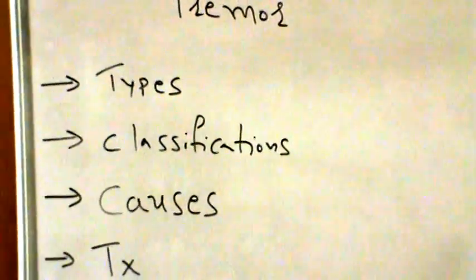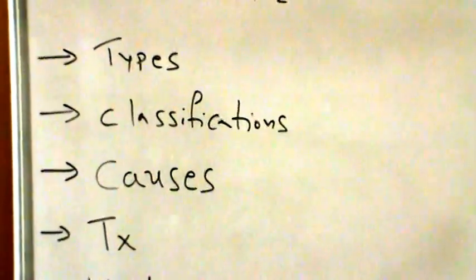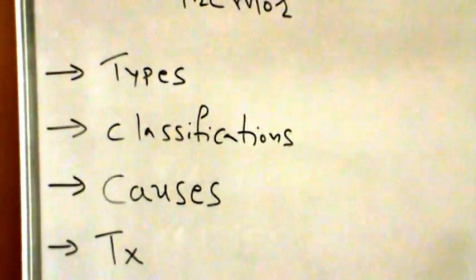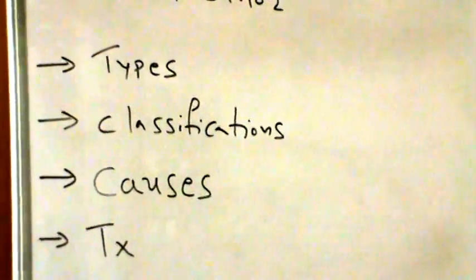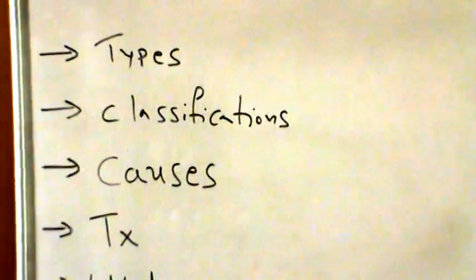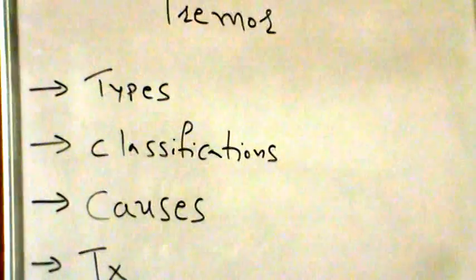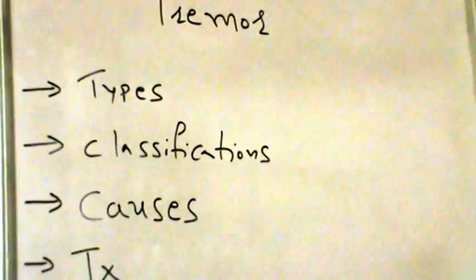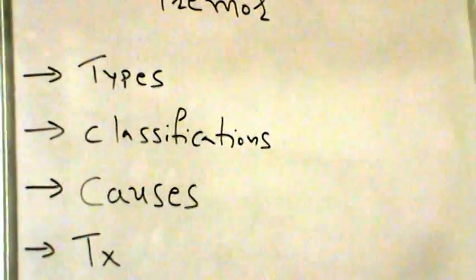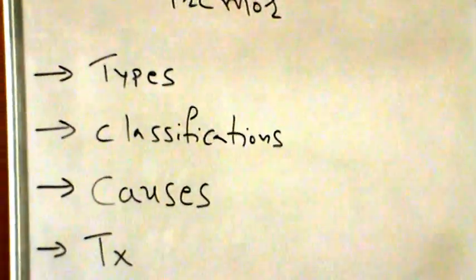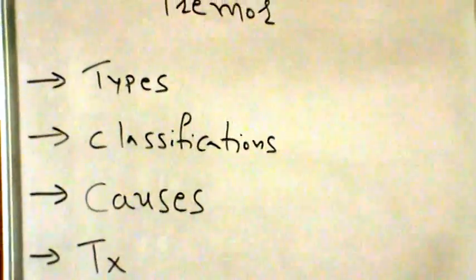Another classification known as a psychogenic tremor may present as any of the tremor types. It is characterized by sudden onset and remission, changes in the direction of your tremor and the affected body part, and greatly decreased disease activity when you are distracted. Patients with psychogenic tremors often have conversion disorder, that is a psychological condition that produces physical symptoms, or another psychiatric disease.